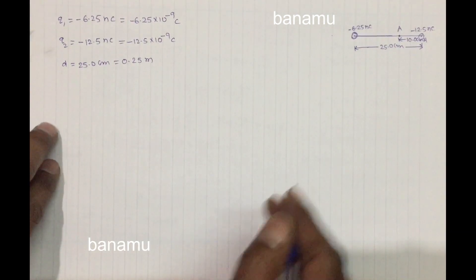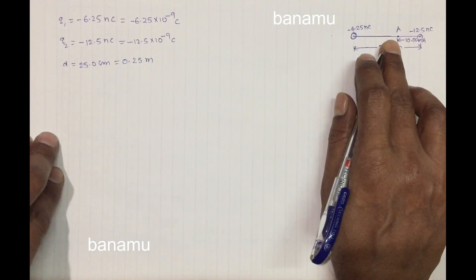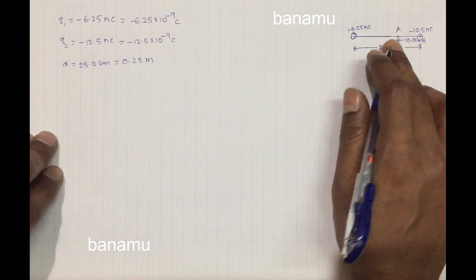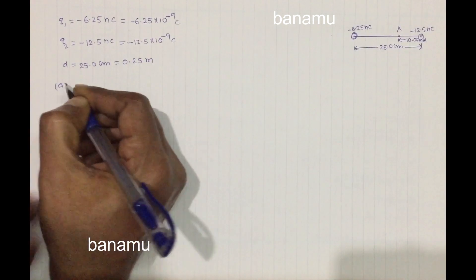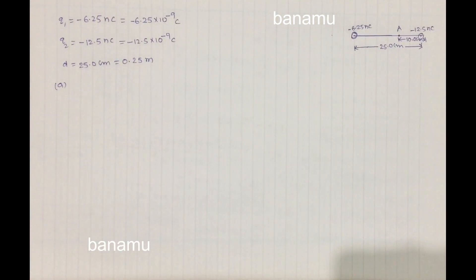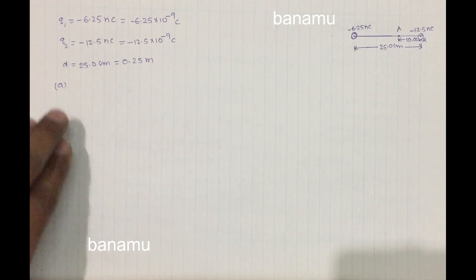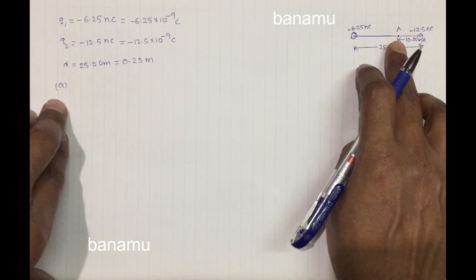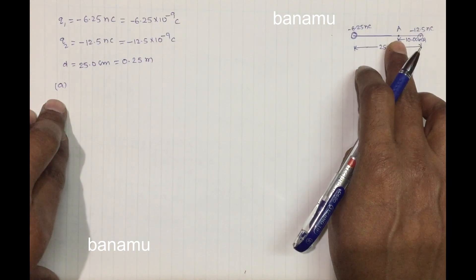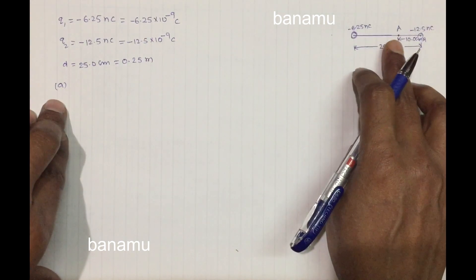Consider point A. Part A: find the electric field at point A due to the two charges.